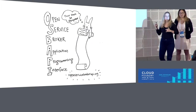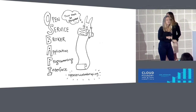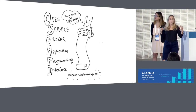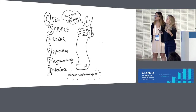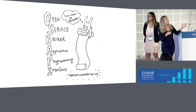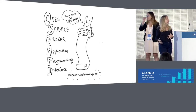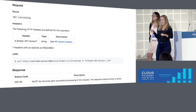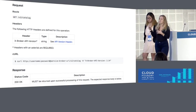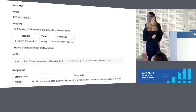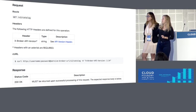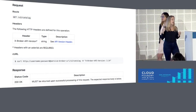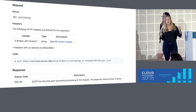OSBAPI — Open Service Broker Application Programming Interface — is an open source effort to create a strong contract between service brokers and the platform. If you're a service broker author and you are OSBAPI compliant, your service broker can be used not only by Cloud Foundry, but also by other platforms like Kubernetes. As a quick example, here's a detailed request/response that an OSBAPI compliant service broker would comply to. An OSBAPI compliant platform would expect a 200 response, and if it doesn't get that, it won't recognize the service broker and app developers won't have access to the marketplace.